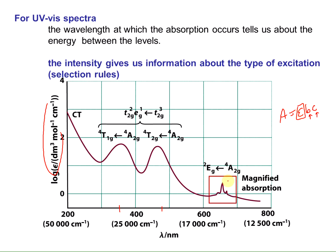As we go from the 4 to the 2, remember we said that wasn't allowed. This would be a spin-forbidden transition because you're changing the multiplicity of the electrons — going from a quartet to a doublet. They had to magnify this region of the spectra for you even to see it, while the other was an allowed transition. The D-to-D transitions are spin allowed, going from quartets to quartets, though there are other selection rules being broken. Over here we have charge transfer, which is much larger — going off scale. So we have spin-forbidden transitions, D-to-D transitions, and metal-to-ligand charge transfers.